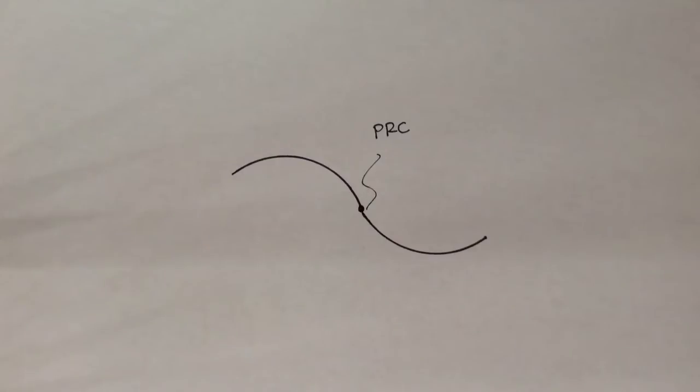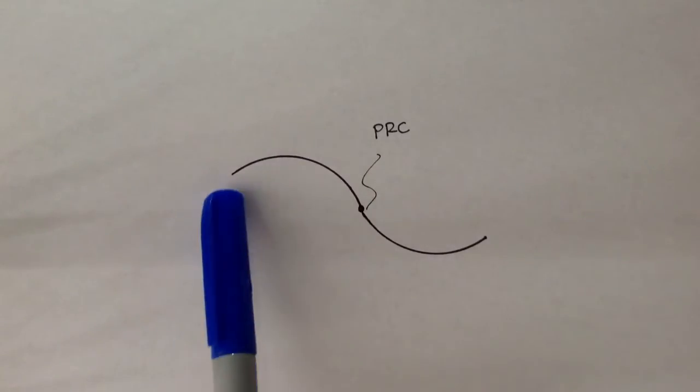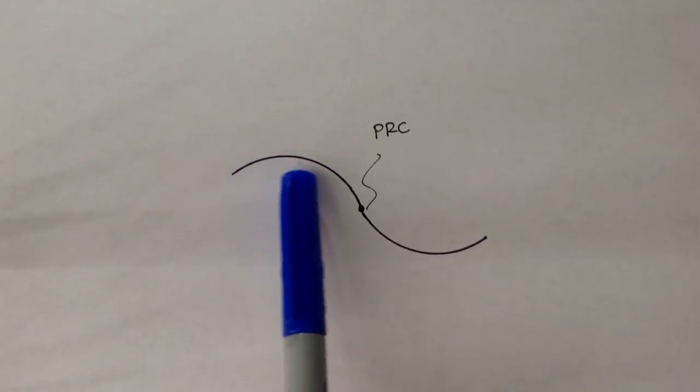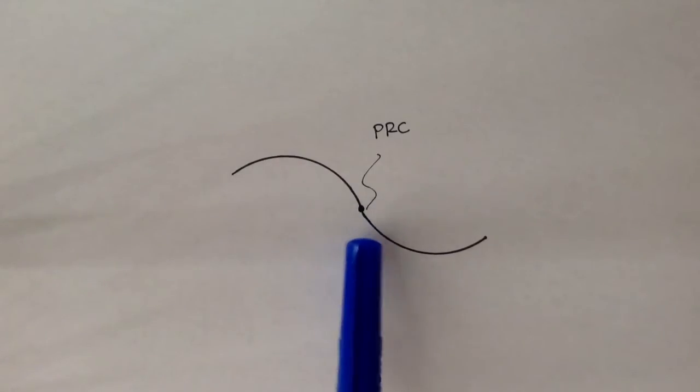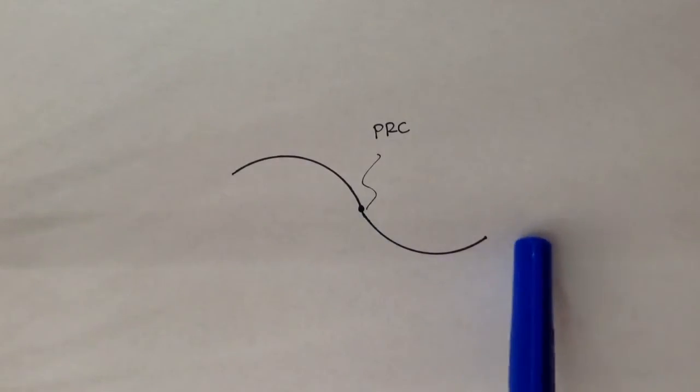What's special about these curves is that the first curve is bending in one direction, and there's a point here where the second curve, or the following curve, bends in a different direction.